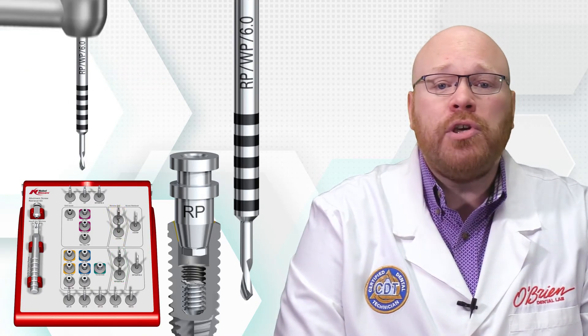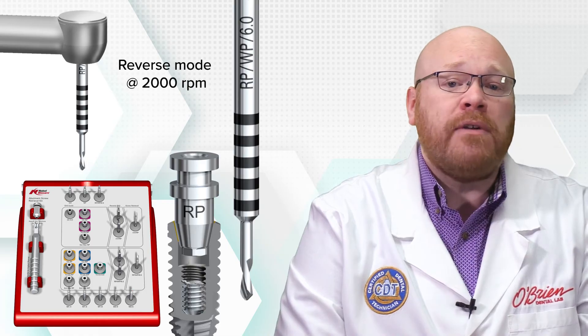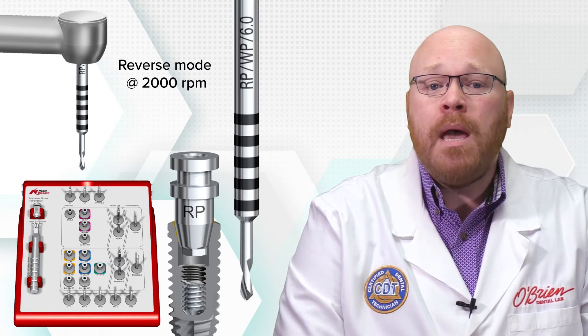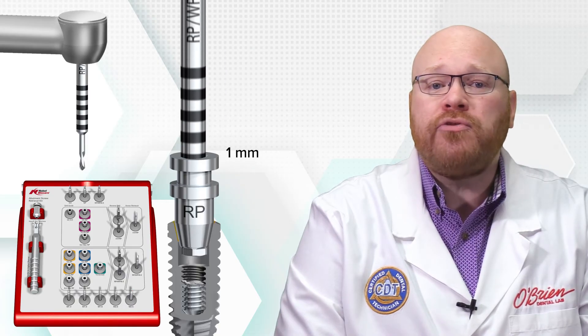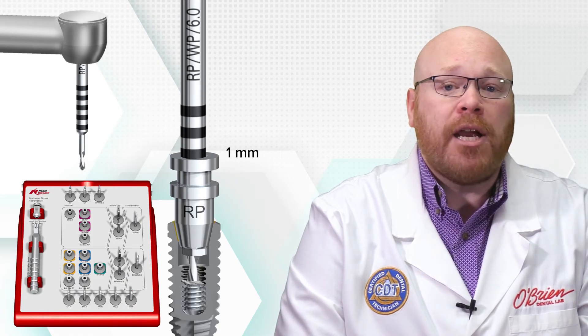Connect the reverse drill to your handpiece and set your handpiece to reverse mode with a speed of 2000 RPM. Place the reverse drill into the drill guide and drill about 1mm into the screw using irrigation and periodic air blasts.